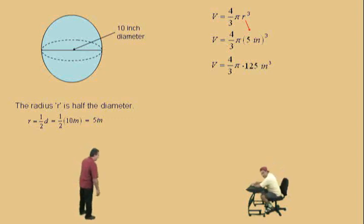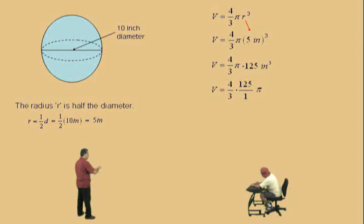Okay, Charlie, now, we have 4/3 times 125. We're going to write the 125 as a fraction. Put 125 over 1, and we'll put the π at the last, and then our dimensions are inches cubed. Now, what is 4 times 125, Charlie? 500. Very nice, 500 over 3 π inches cubed.